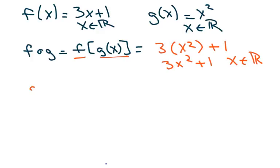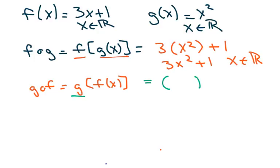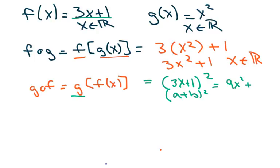Now g composed of f of x: I write down g, which is x squared, and everywhere there's an x I put parentheses and dump in 3x plus 1. Foil that out with the (a+b)² formula. You're going to get 9x squared plus 6x plus 1, where x belongs to all reals.